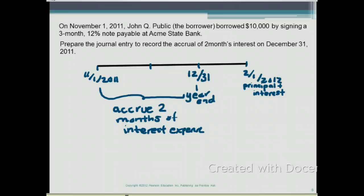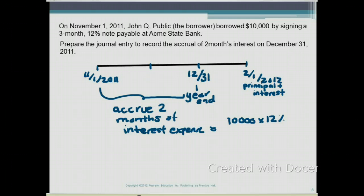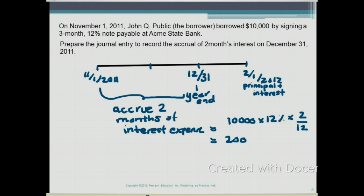Let's calculate the interest expense. Interest expense equals $10,000 (the principal) multiplied by the interest rate of 12%. Interest is always stated in annual terms, so this 12% is an annual rate. Since we only borrowed the money for two months, we prorate: $10,000 × 12% × (2/12), which gives us an interest expense of $200.